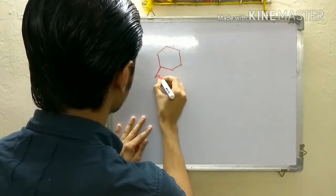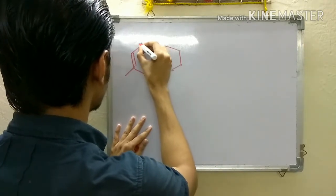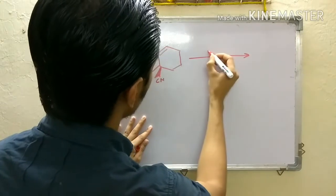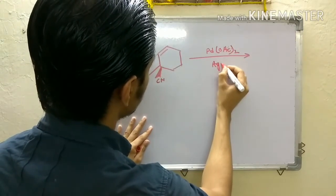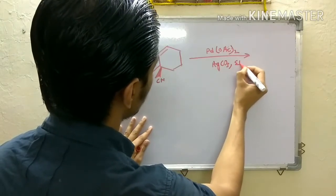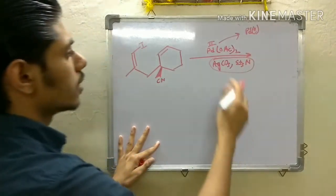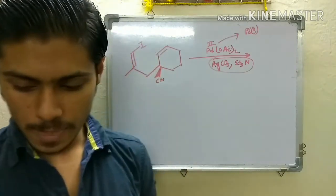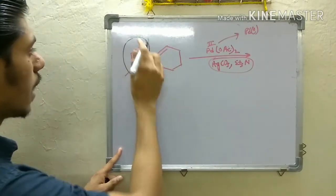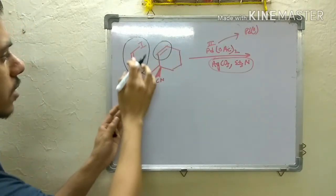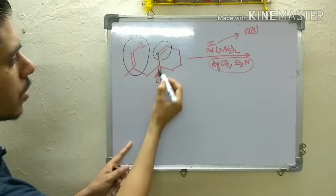Now the problem given in the exam: this is your substrate. You have a cyanide group here. The compound is given with palladium diacetate, a base like silver carbonate (Ag₂CO₃), and triethylamine. The role of this base is basically to reduce palladium(II) to palladium(0), which is the active catalyst for the Heck reaction. You have to identify the two components for the Heck reaction. This is your vinyl phenyl halide part and this is your alkene part. It will be a coupling reaction — it can add over here or over here.